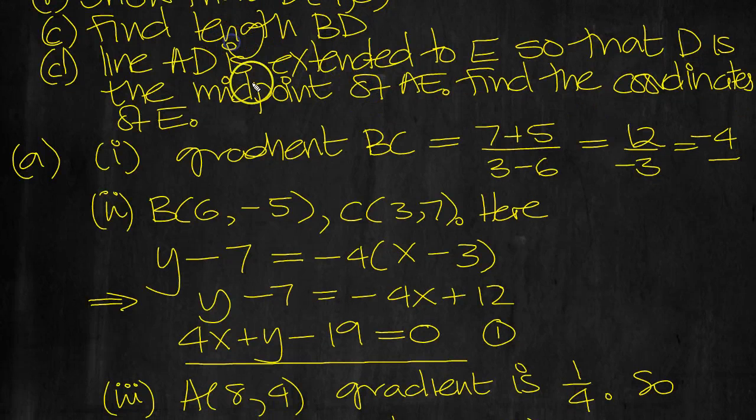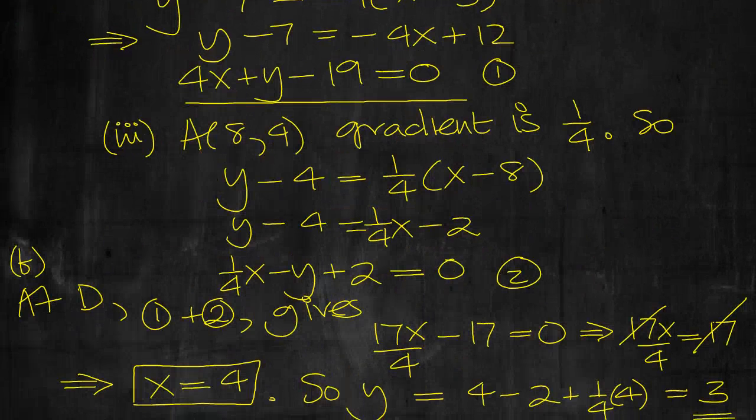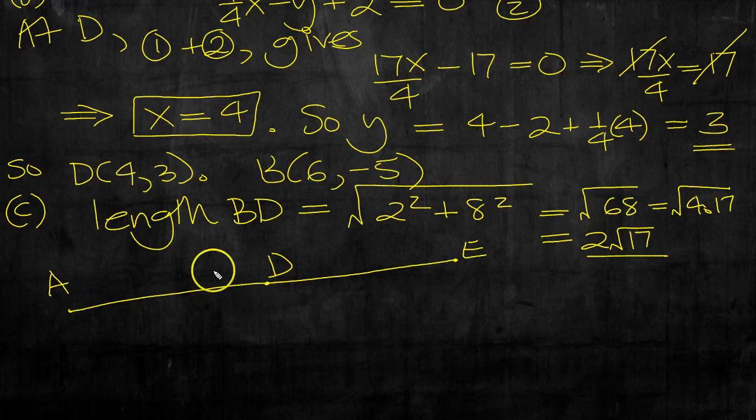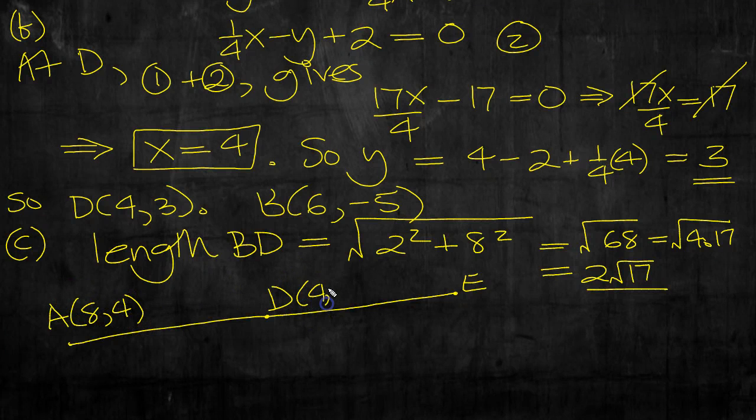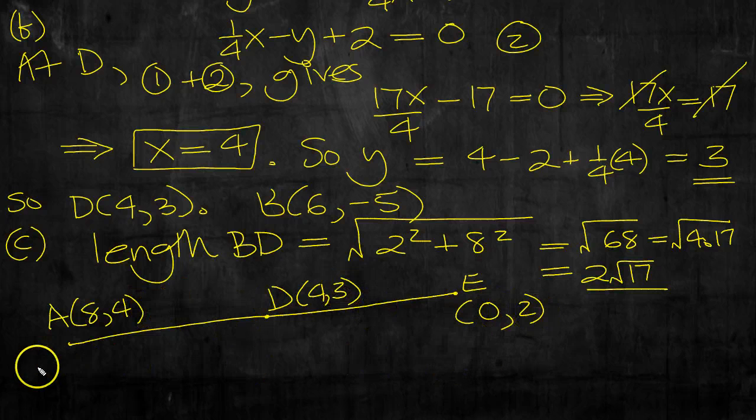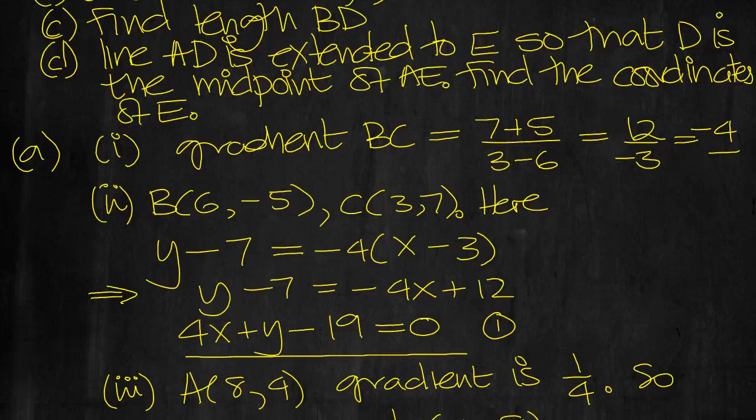That's length BD then, that's part C. And then the line AD is extended to E so that D is the midpoint of AE. Find the coordinates of E. So we've got A, we've got D. A is 8, 4, D is 4, 3. So we've got A, D, and it's extended to E. A is the coordinate 8, 4, D is the coordinate 4, 3, and D is now the midpoint, so E will have coordinates. For 8 to 4 to 0, to be the middle, and 4 to 3, this would need to be 2 for 3 to be the middle between 2 and 4. E has coordinates 0, 2. So let's have a look at the question. Find the coordinates of E, so that's that done.